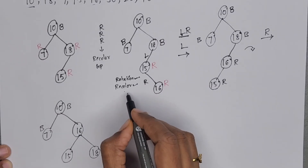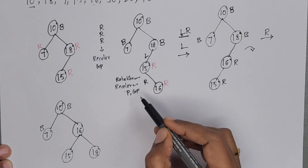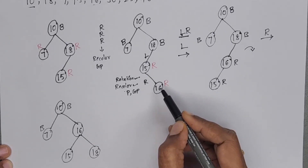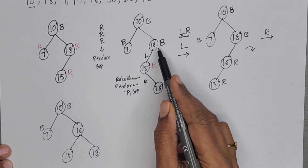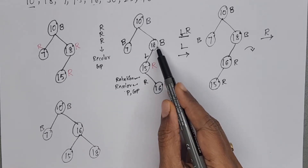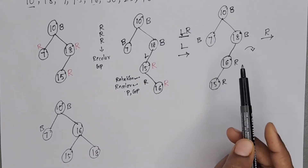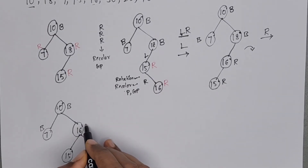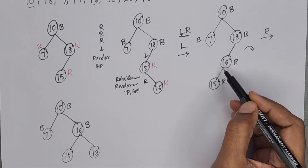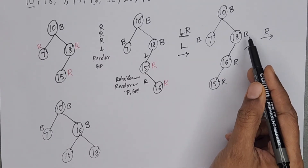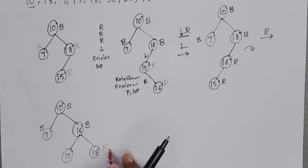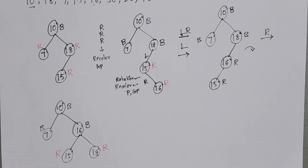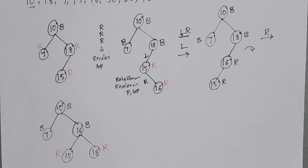Next, recolor the parent and grandparent. After the first rotation, the leaf node is 15; its parent is 16. Change 16 from red to black. The grandparent is 18, which is black — make it red. Node 15 remains red. Now there is no red-red conflict, and the number of blacks is the same in every path, so we can add the next element.